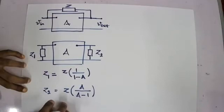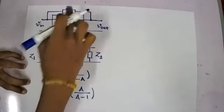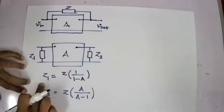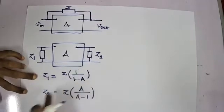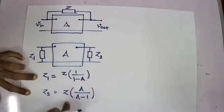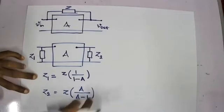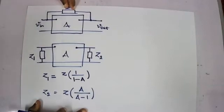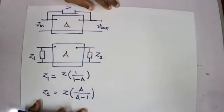So this is Miller's theorem. The impedance Z can be divided into two components: one equal to Z into one minus A, and the other equal to Z into A divided by A minus one. Similarly, if we have a resistor, we can directly substitute this equation.